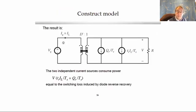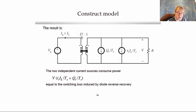Taking the two models together for the inductor volt-second balance and the capacitor charge balance and combining them — including combining the dependent sources into the usual transformer — we get the complete model. We have the ideal boost transformer with ratio D' to 1, and then two independent current sinks that model the loss caused by the reverse recovery. These represent actual power losses: the voltage across these sources is the output voltage V, and they cause a power loss equal to V times the sum of the two currents.